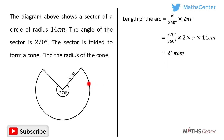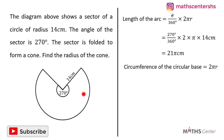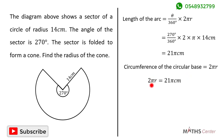As I've already said, if this sector is folded to form a cone, then the length of the arc of the sector will be equal to the circumference of the circular base of the cone. The circumference of the circular base of the cone is given by the formula 2 pi r, where r is the radius of the circular base. So 2 pi r is equal to 21 pi centimeters, where r is the radius of the cone which we are looking for.